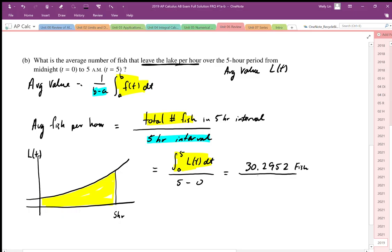This is over a five-hour interval. So working that out, the average number of fish that leave per hour or the average value of L of t works out to be 6.0590 fish per hour.